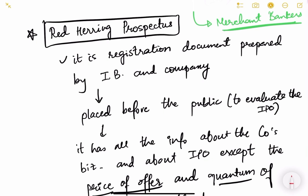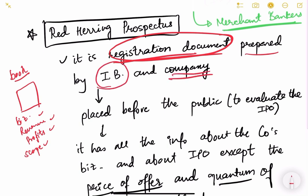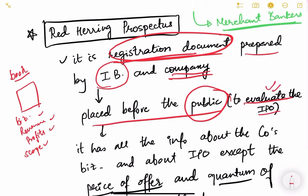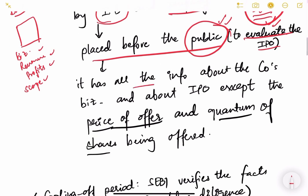So what is the red herring prospectus? It is a registration document — basically a volume of a book — in which everything about the company is mentioned: what business the company is doing, what are their revenues, what were their profits in previous years, what are their plans for expansion, what is the scope for future growth. It is prepared by the investment banker and the company, and it is placed before the common public to evaluate the IPO. It is a public document available on the company's website and also submitted to SEBI, the Securities and Exchange Board of India.